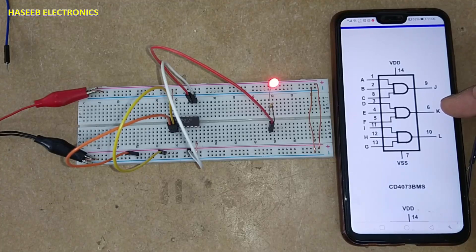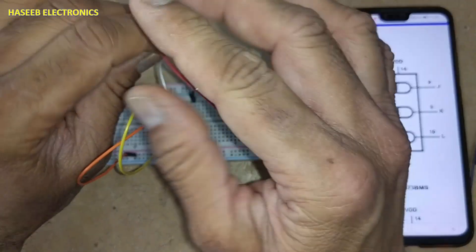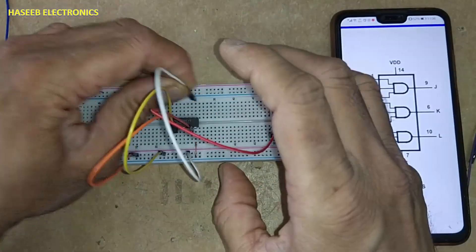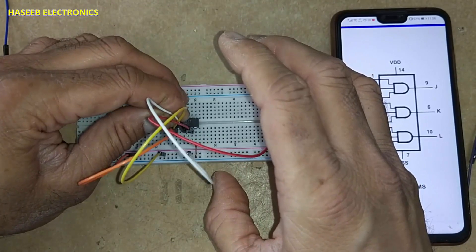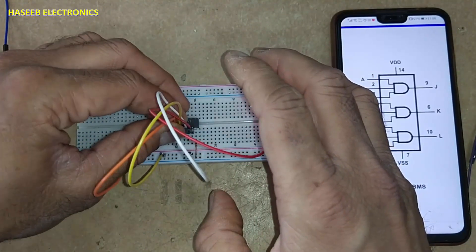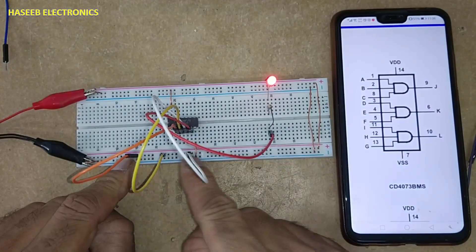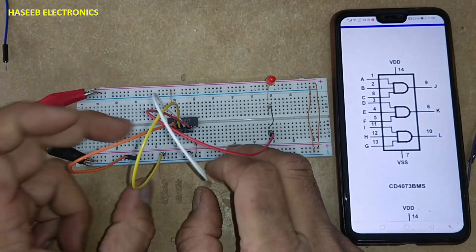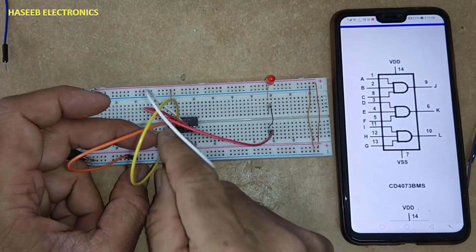Let's check the second gate at pin 6, which is the output. Pins 3, 4, and 5 are the inputs. With all inputs high, the output is high. With any input low, the output is low.